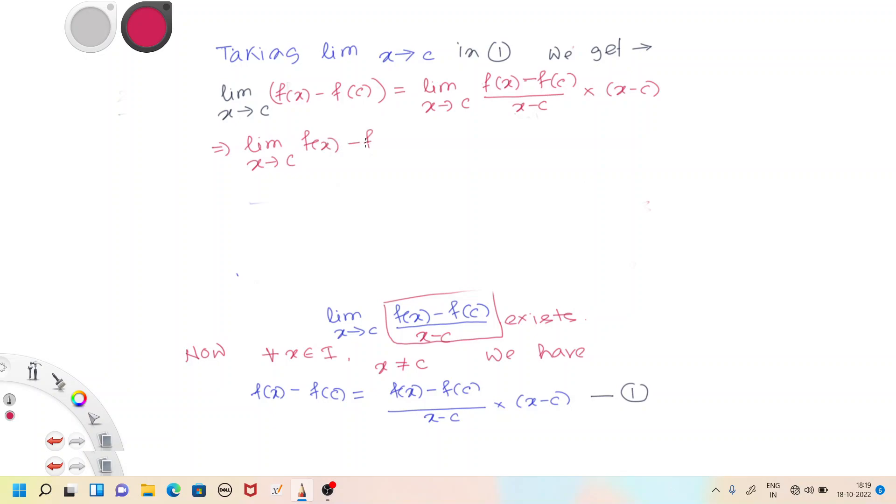This value is f'(c) times limit x approaches to c of (x - c). Using the algebra of limits, we can separate the limits. This gives us f'(c) times 0, which equals 0.